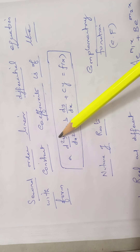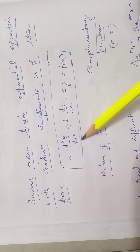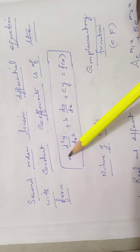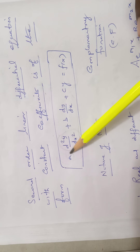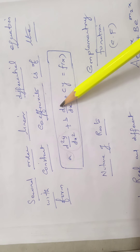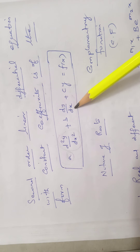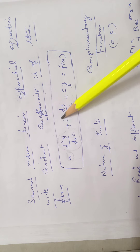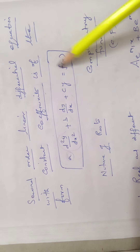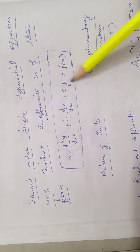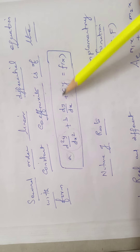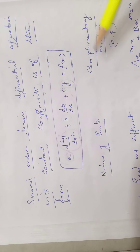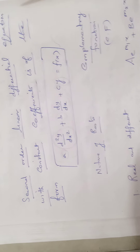Constant coefficient means d²y/dx² is a function, and the constant coefficient is a. Also, dy/dx is a function, b is a constant coefficient, y is a function, and c is a constant coefficient. This is the equation.